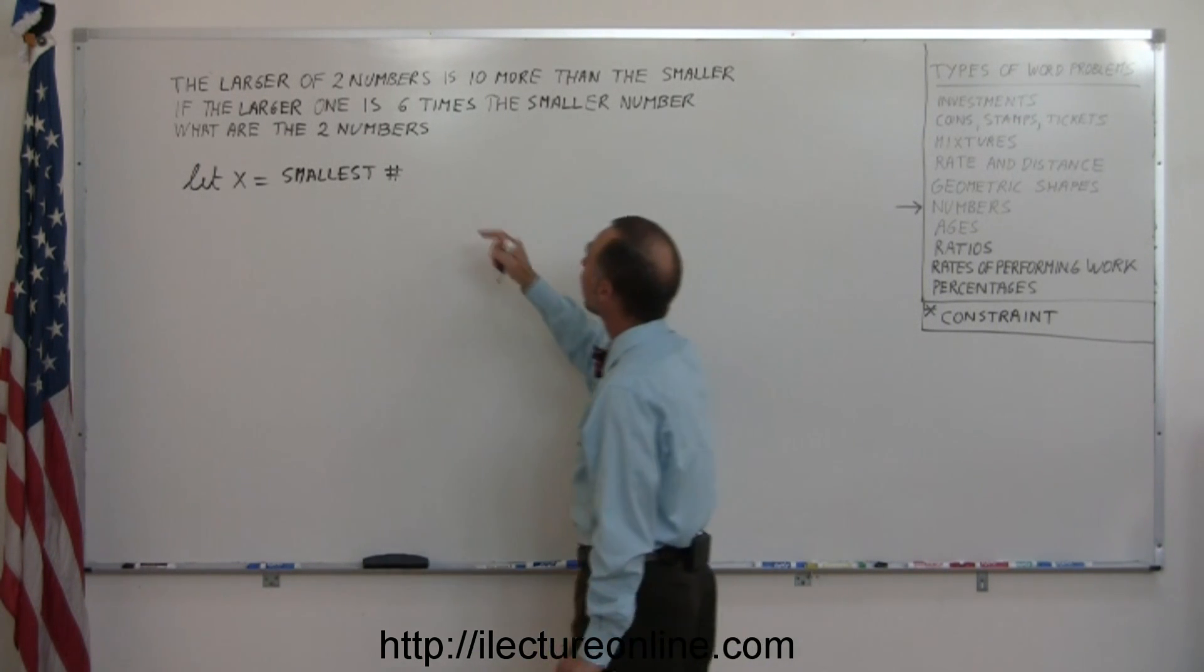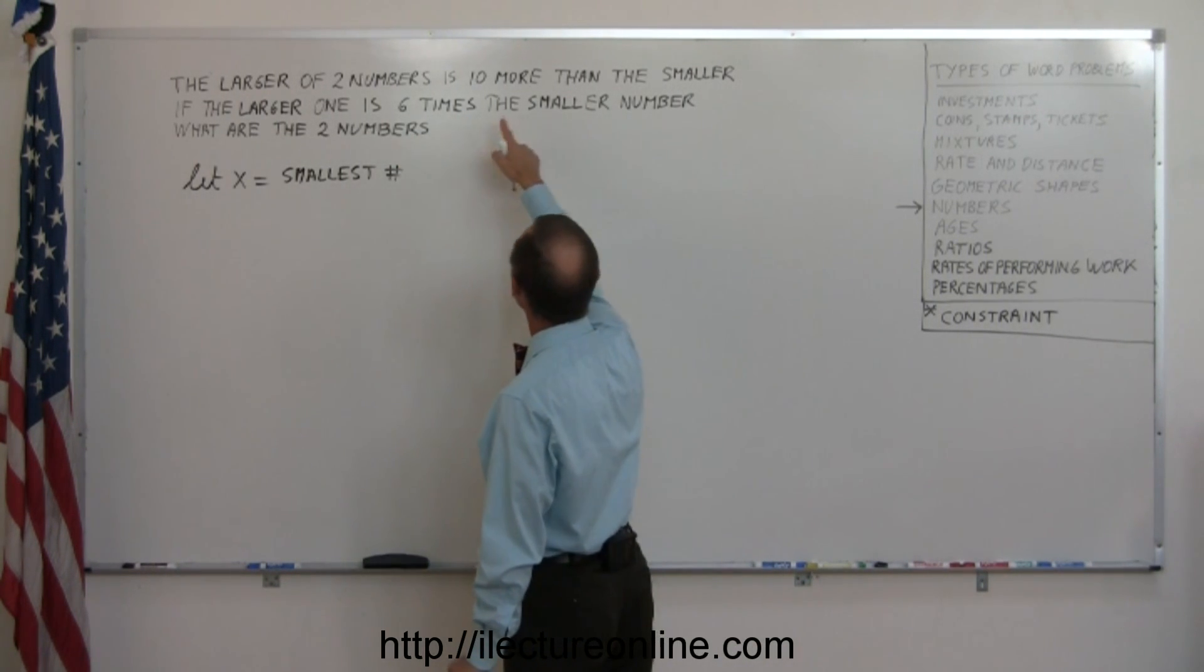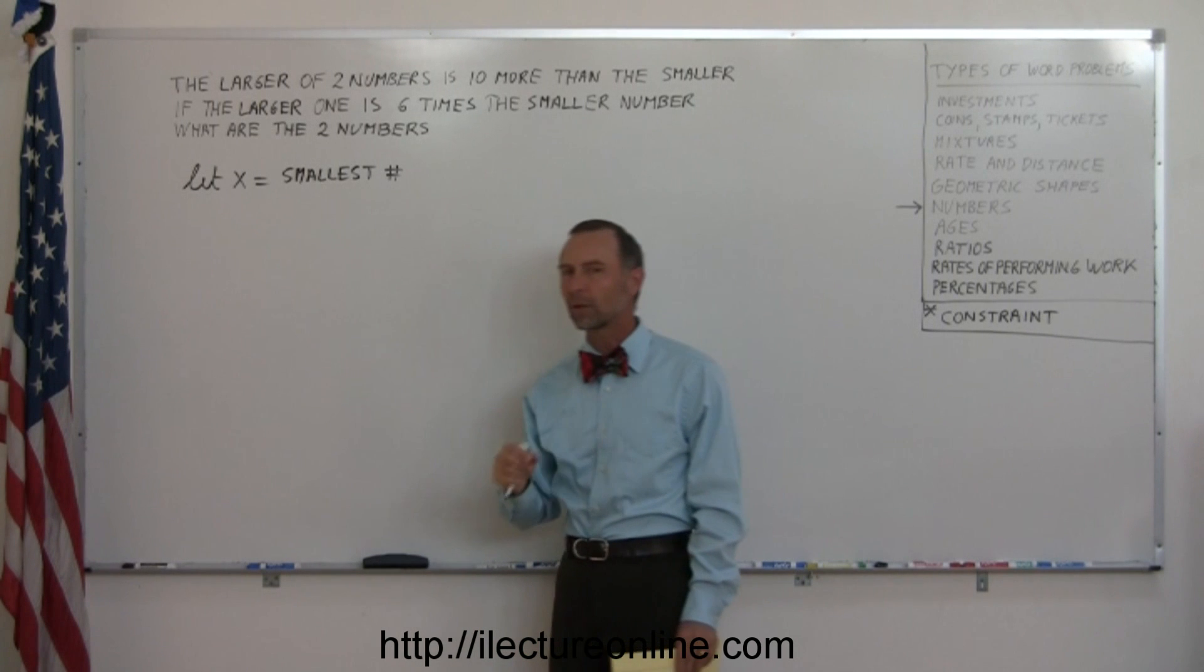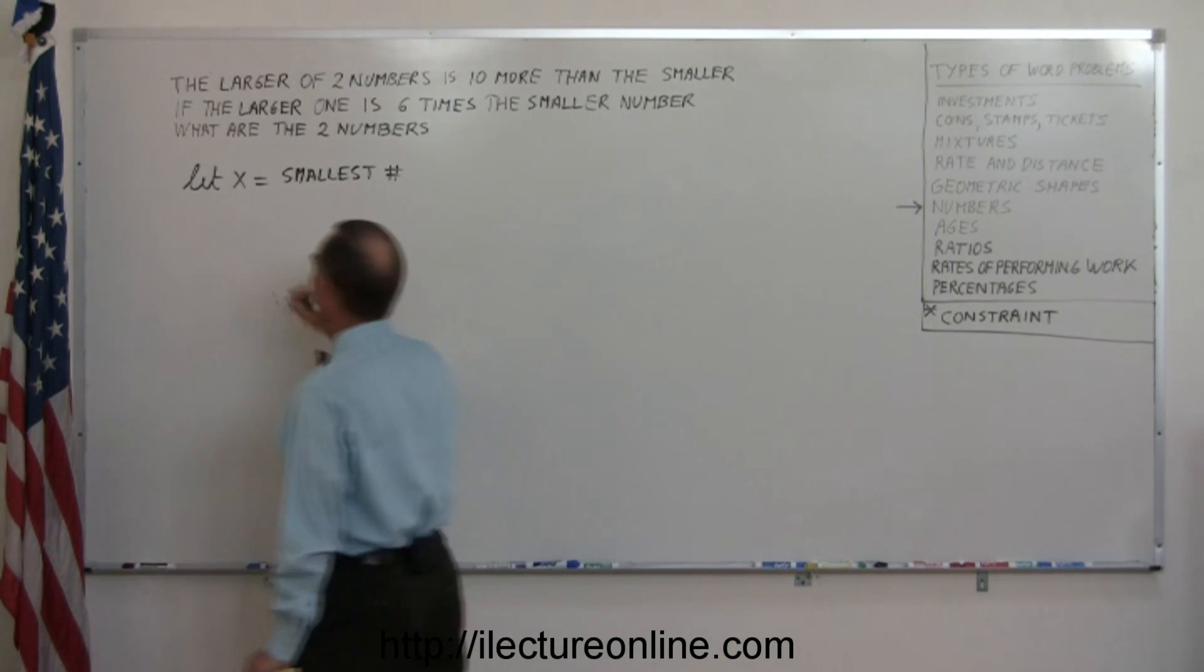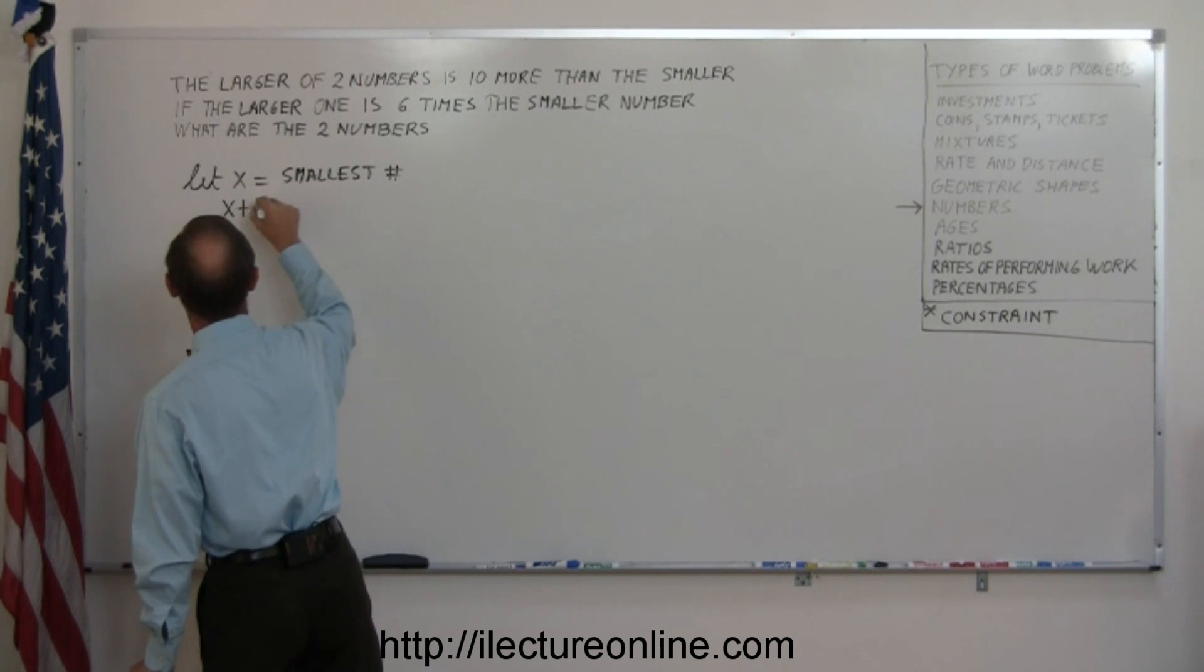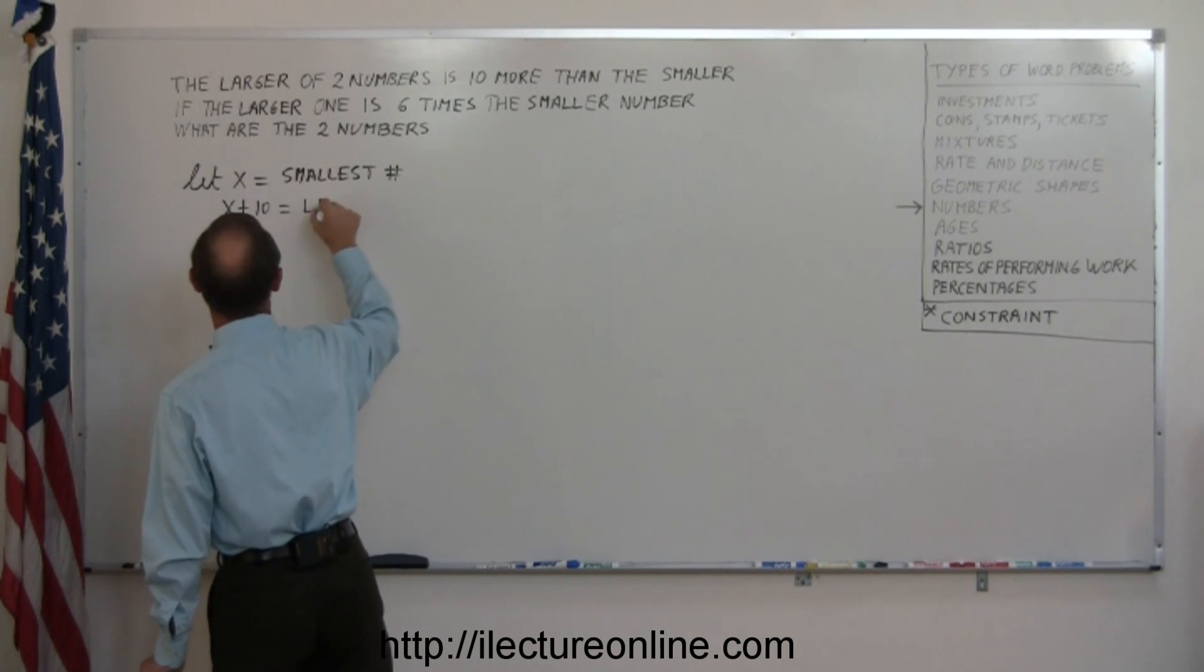Now it tells you that the larger of the two numbers is 10 more than the smaller one. So if the smaller one is x, 10 more than x would be x plus 10. So we're going to let x plus 10 equal the larger number.